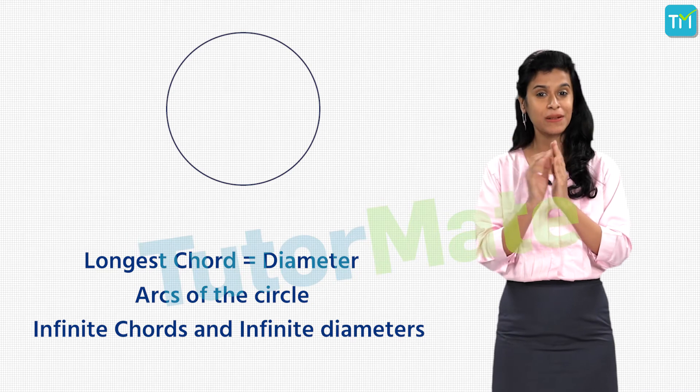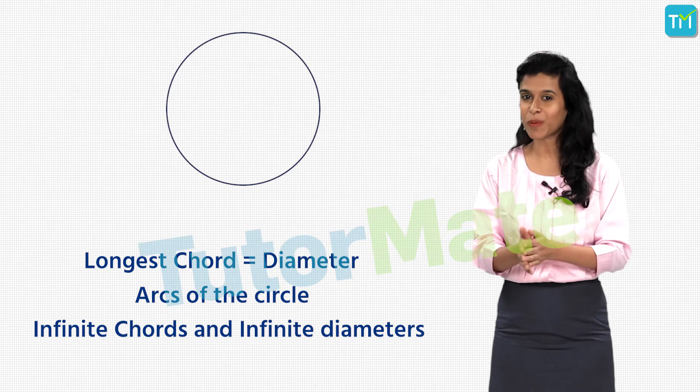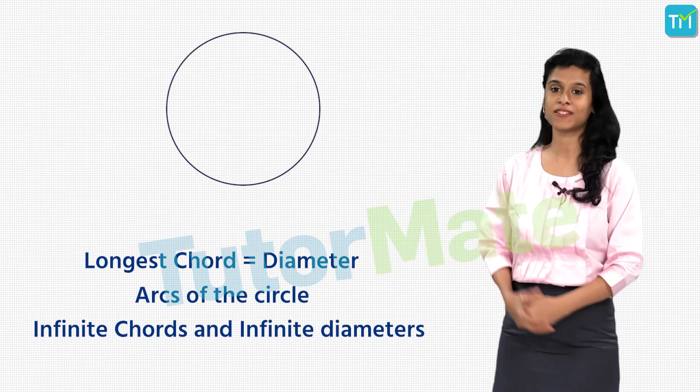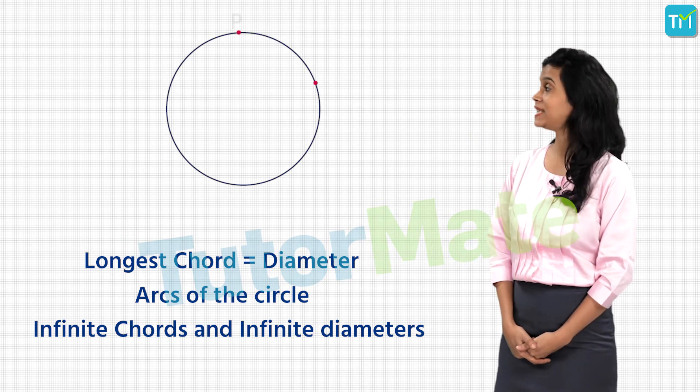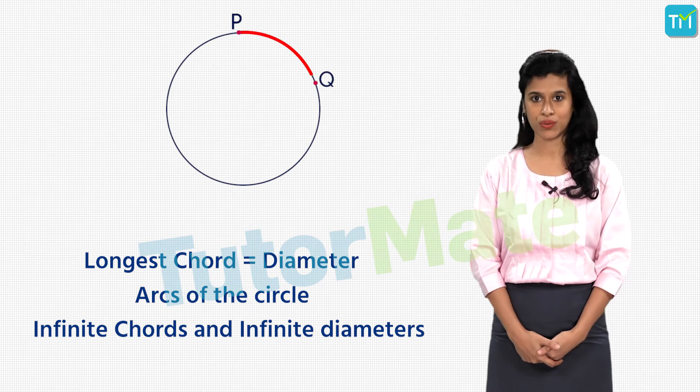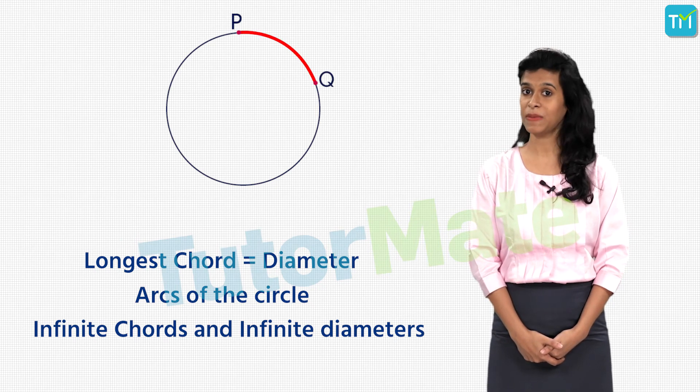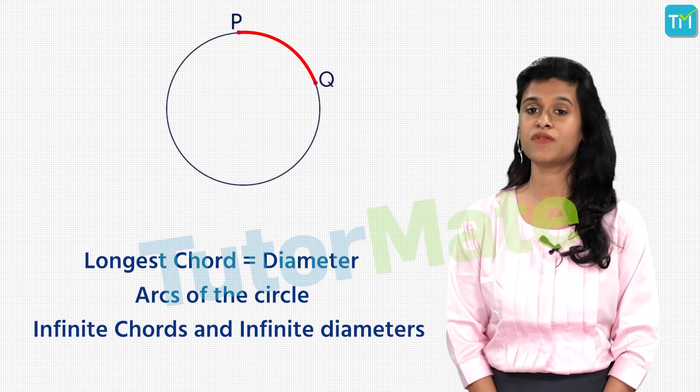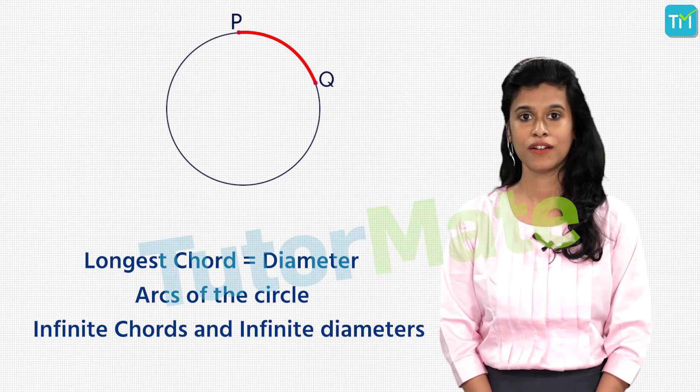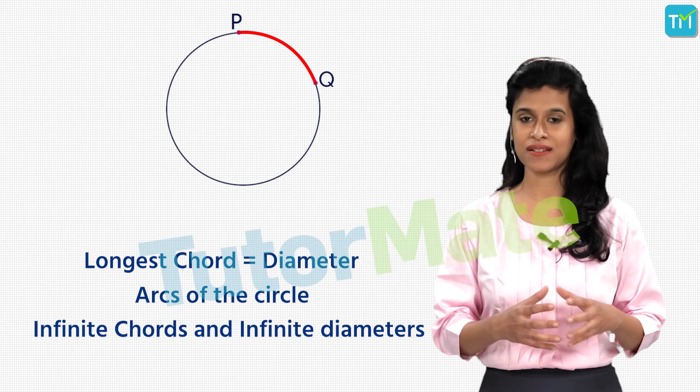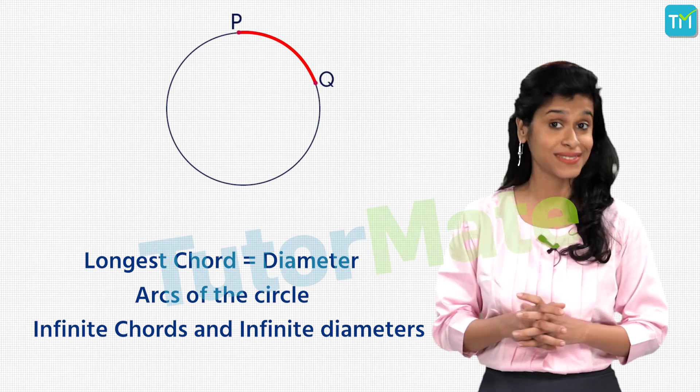Did you know that there is an actual term for these pieces in the world of geometry? Let's look at this closely by considering a circle. Now we'll take two points on the circle, P and Q. But we won't join them in a straight line. Instead, we'll just take a part of the circle from the point P to the point Q. And this curved part of the circle is called the arc of the circle.